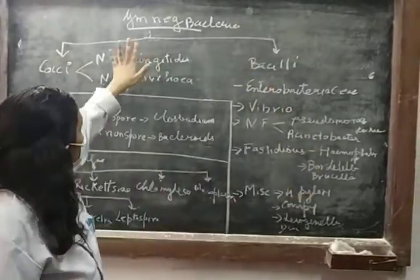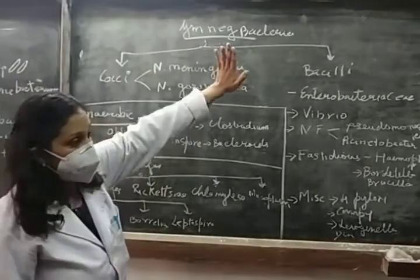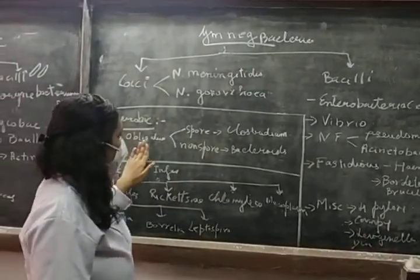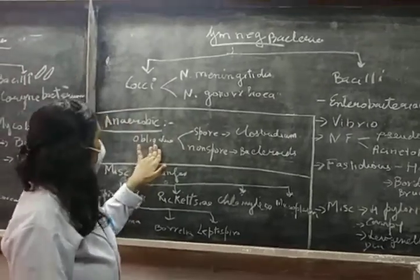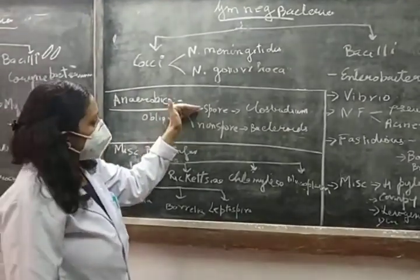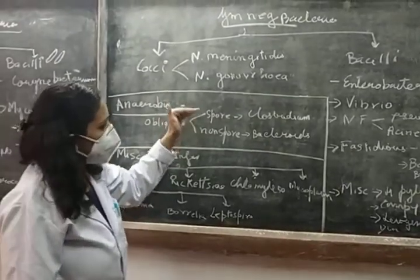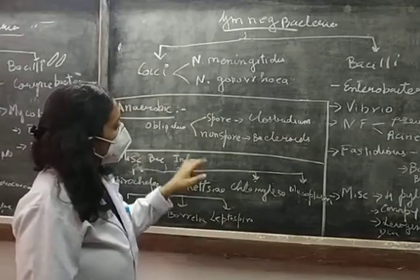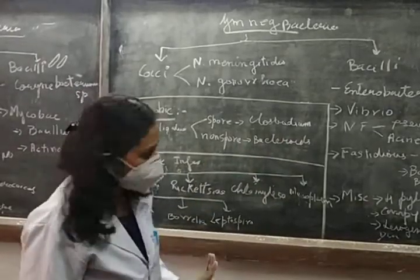These are the anaerobic bacteria — both gram-positive and gram-negative. Coming to obligate anaerobic bacteria: they are divided into two. One is spore-forming — for example the Clostridium family — and the other is non-spore-forming, for example Bacteroides species.